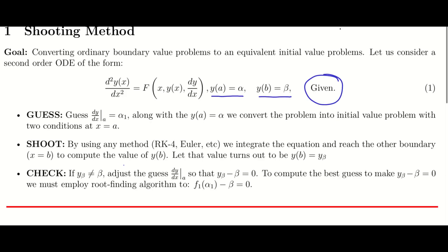First I outline the method. I have to guess the derivative which is not given in the problem. First we choose or guess the derivative dy/dx at x equals a. This is the domain at x equals a, and the other boundary is at x equals b. At x equals a, we assume the derivative of y is something, say alpha 1.